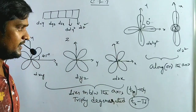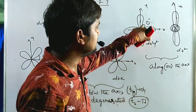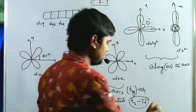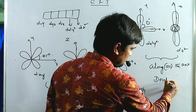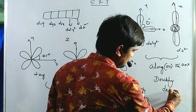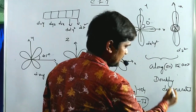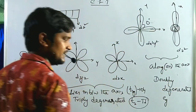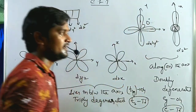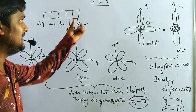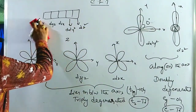The two orbitals oriented along the axes — d(x²−y²) and d(z²) — are called doubly degenerate orbitals, represented as EG in octahedral complexes and E in tetrahedral complexes. These are the classifications of d orbitals based on their orientation. Now we will discuss crystal field splitting in octahedral complexes.